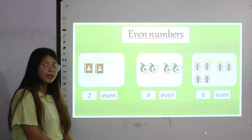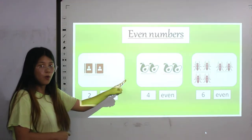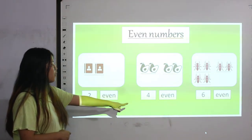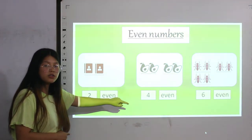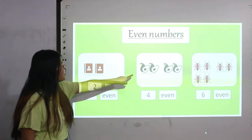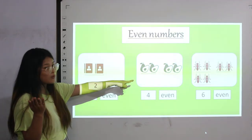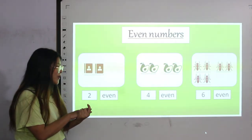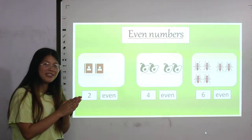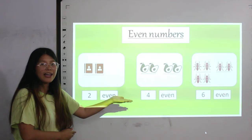Moving on to the next card, let's count how many avocados — one, two, three and four. There are four avocados. To see if four is odd or even, we have to pair them up. These two are in pair and those two are also in pair. No one is left alone, so the number is even. Four is an even number.